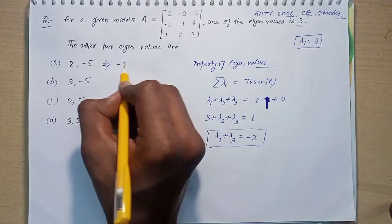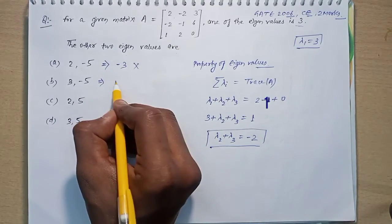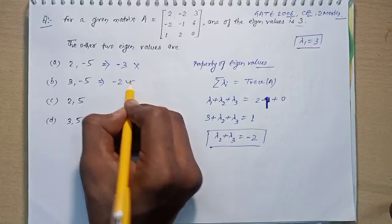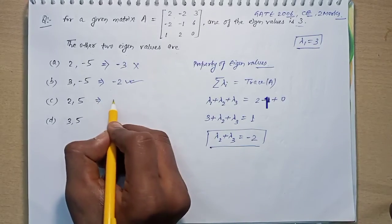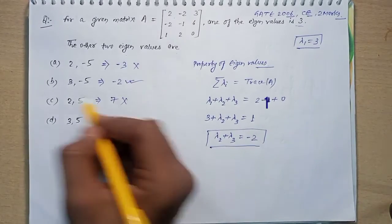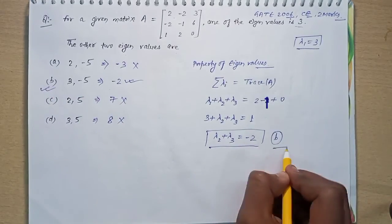The sum is two minus five, that is minus three, so it is wrong. Here the sum is three minus five, that is minus two, so it is right. And here the sum is seven, so it is wrong. And here the sum is eight, so it is also wrong. So option B is correct.